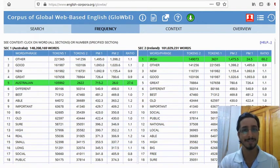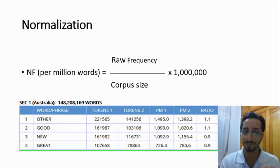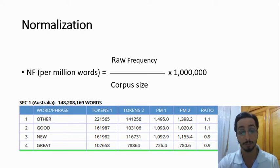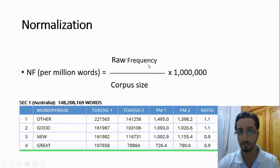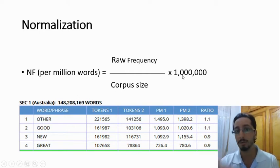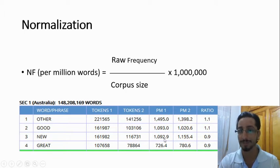How can you do that? To normalize, you need to use this formula. Since the corpora we are using are made of more than a million words, we need to normalize per million words. The formula is: divide the raw frequency by the corpus size, then multiply by one million. That gives you the results shown here — PM1 and PM2, which stand for the normalized frequencies per million words of Tokens 1 and Tokens 2 respectively.